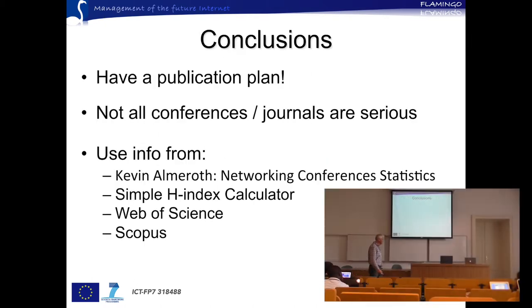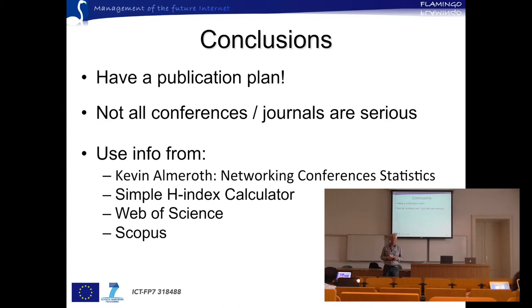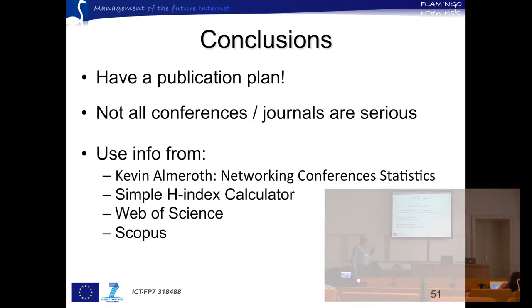In conclusion: first, have a publication plan — think about where to publish from the start of your PhD, not at the end. Second, not all conferences and journals are serious — there's business and a lot of money involved, so don't trust everything. Third, use Kevin Almeroth's conference statistics page as a first sanity check, look at the H-index calculator knowing its data isn't always correct, and consult Web of Science and Google Scholar. Look at citations and track records, and observe where good researchers in your community publish.